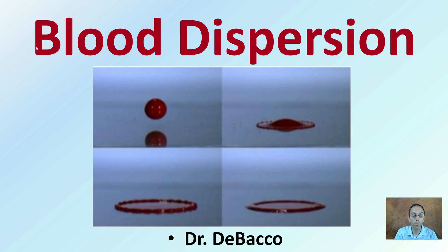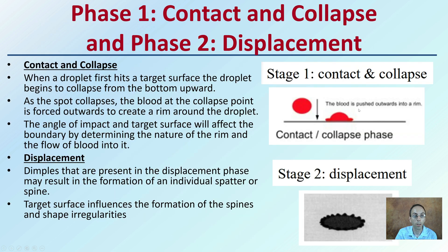Here we're going to take a brief overview of the four main stages of blood dispersion as it comes in contact with the surface, as it gets dispersed, and the steps it goes through between when it initially is falling to that final result we'll see after.